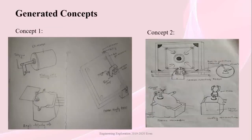Moving on to generated concepts, we generated 4 concepts, of which 2 are shown here. For concept 1, a belt mechanism with 2 pulleys is used for board movement, a stepper motor for angle adjustment, and a high RPM DC motor attached with a flipper for the firing unit. For concept 2, a crankshaft mechanism is used for board movement, a claw for holding the striker, a servo motor for angle adjustment, and a solenoid trigger mechanism for firing.